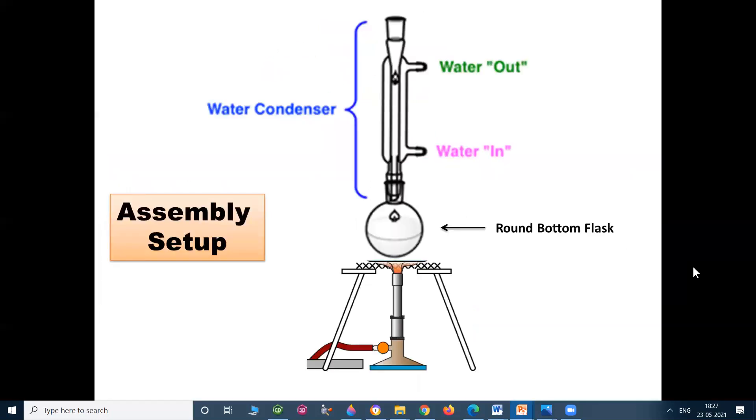Let us see the diagrammatic way of this practical. This is the experimental setup in which we require round bottom flask, wire gauze, tripod stand, burner and water condenser. Here the round bottom flask is attached to the condenser and heated on wire gauze.